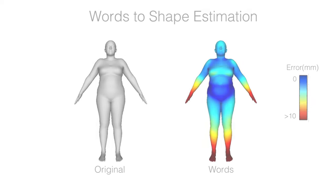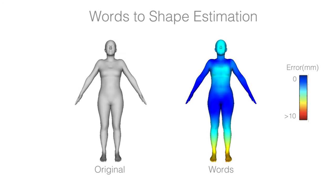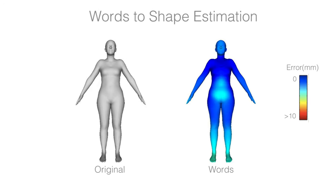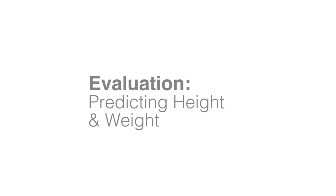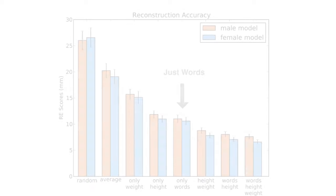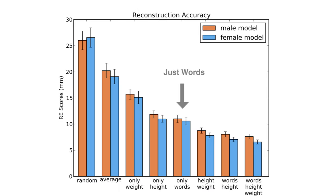We computed the mean Euclidean distance between the vertices of the true and estimated bodies. The error between predicted body and true body is about a centimetre. Often we know more about a person than the linguistic ratings — for example, most people roughly know their height and weight. While it is well known that people overestimate their height and underestimate their weight, we can correct for this known bias. If we add reported height, weight, or both to the linear prediction, our mean Euclidean error goes down to below 1 centimetre, making this viable as an alternative to body scanning.